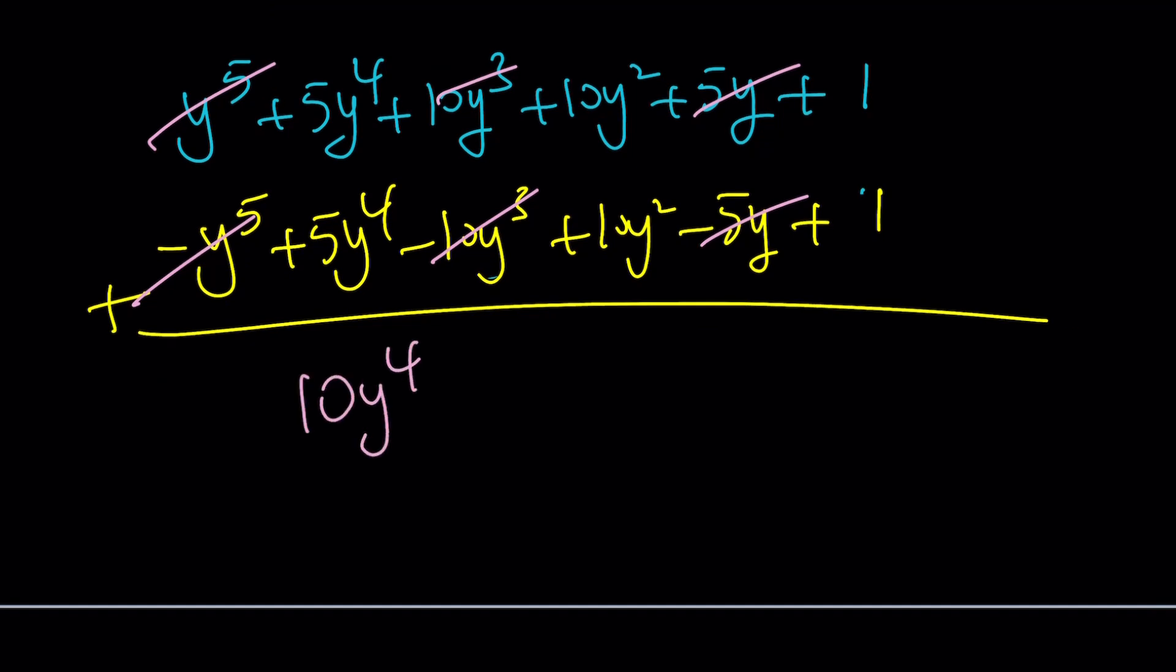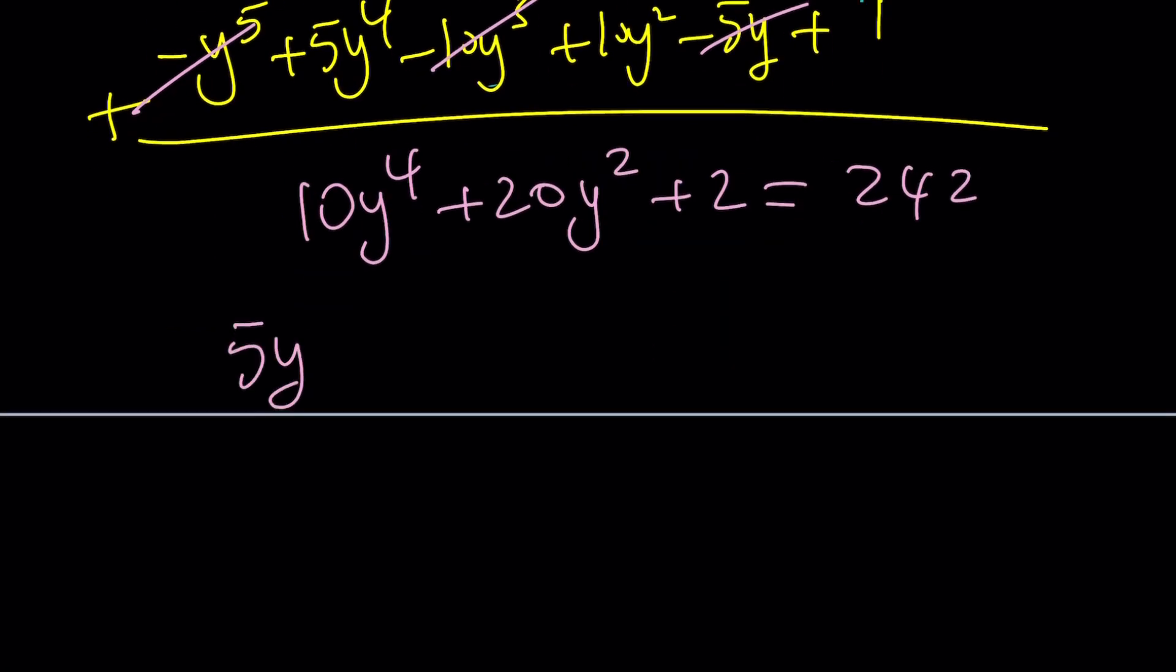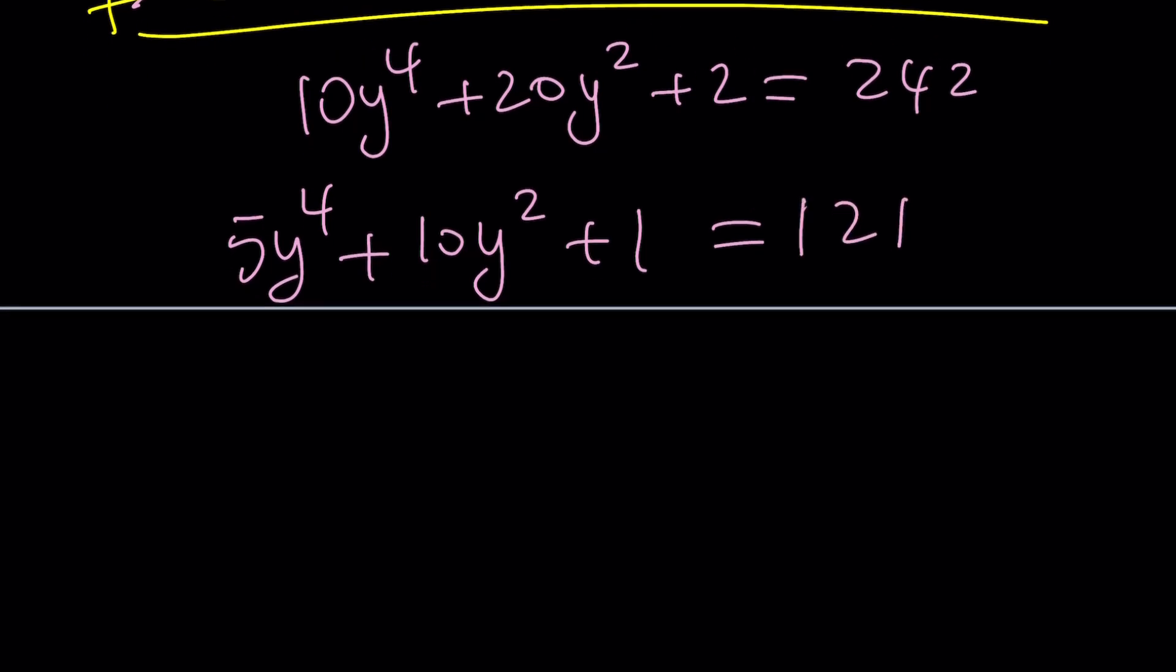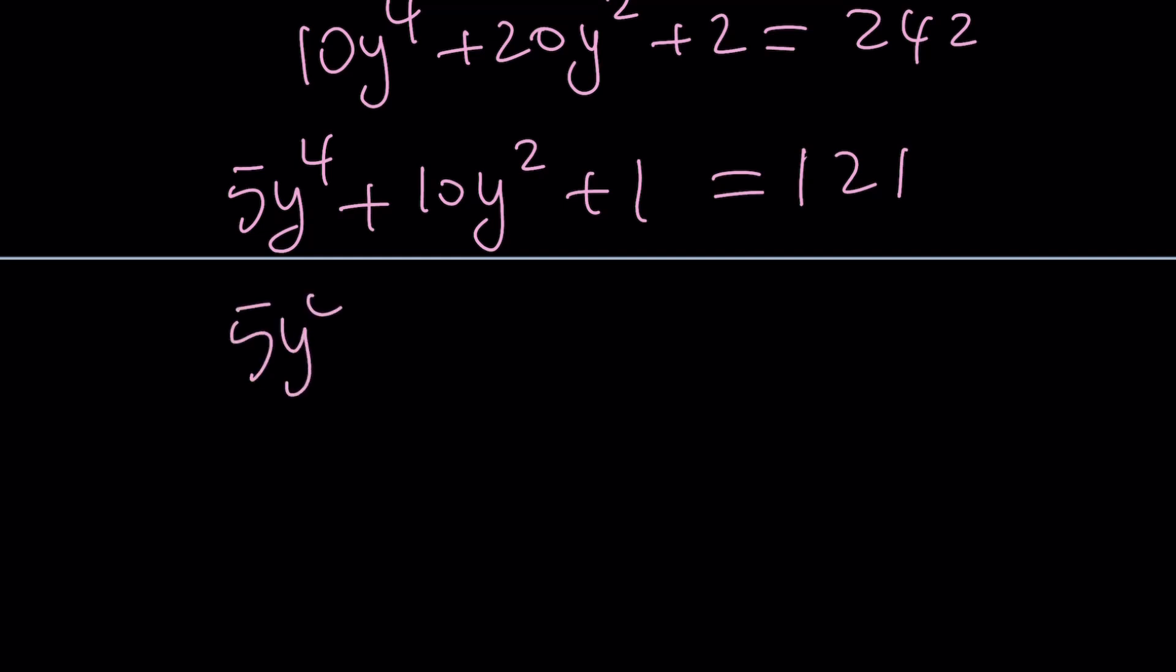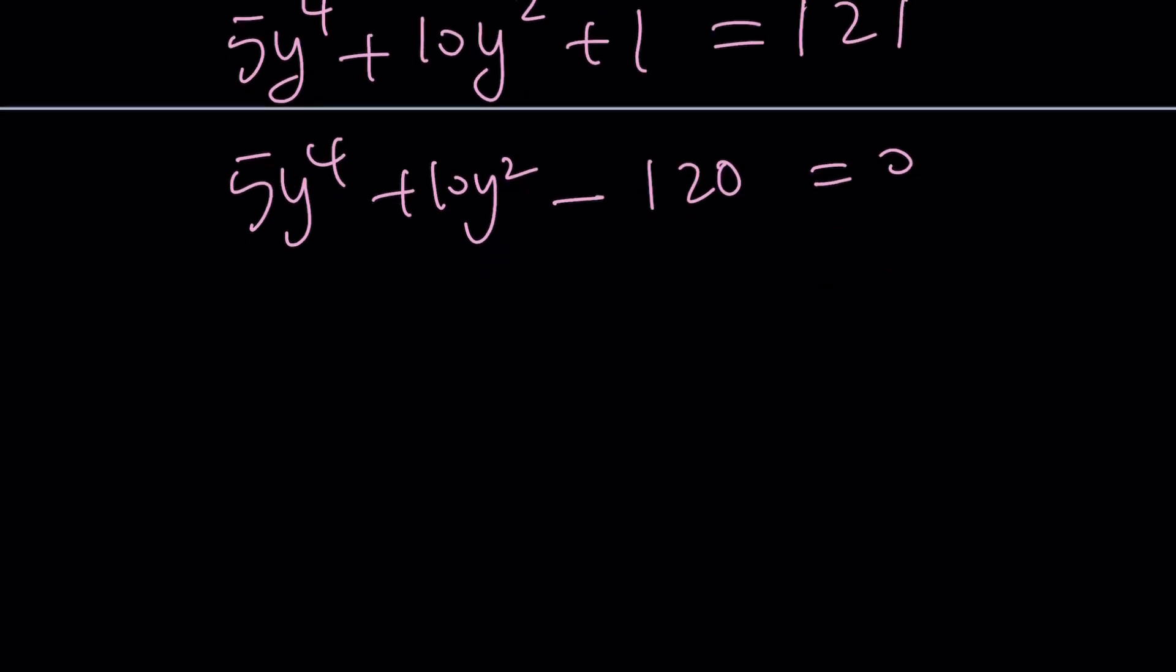We get 10y^4 + 20y^2 + 2 = 242. We can definitely divide both sides by 2 and get something slightly simpler. And that is going to be 5y^4 + 10y^2 + 1 = 121. I don't know why I didn't subtract the 242 first. I don't know. But we can do that now. 5y^4 + 10y^2 - 120 = 0. Uh-oh, that's nice. We can divide everything by 5. Super duper. y^4 + 2y^2 - 24 = 0.